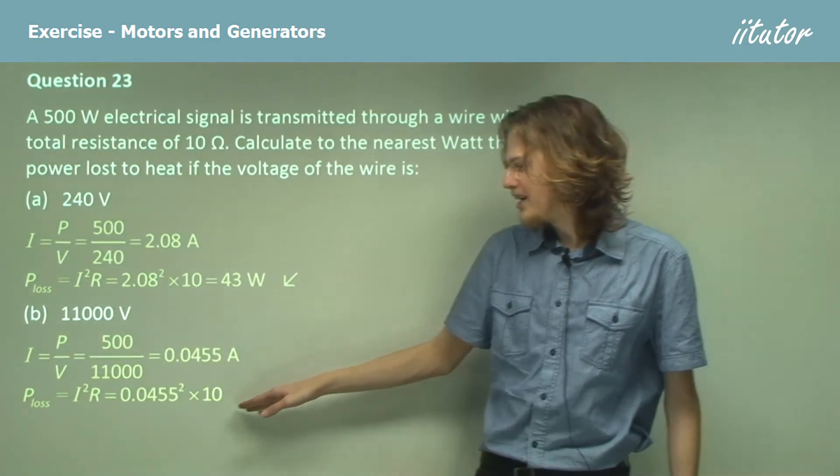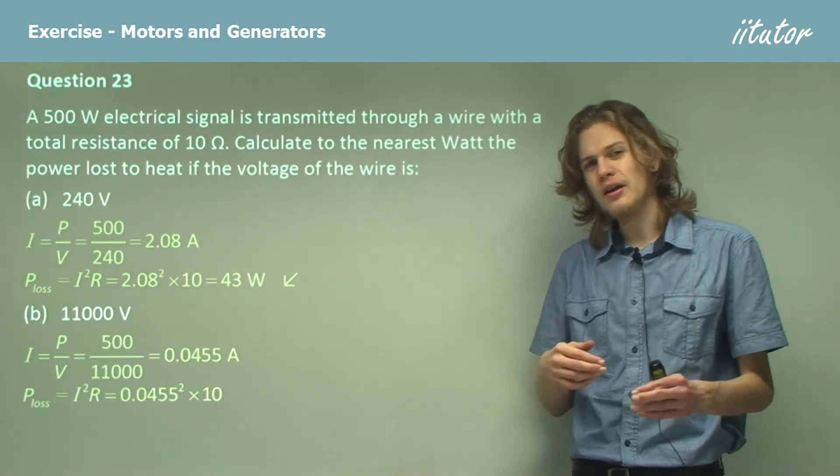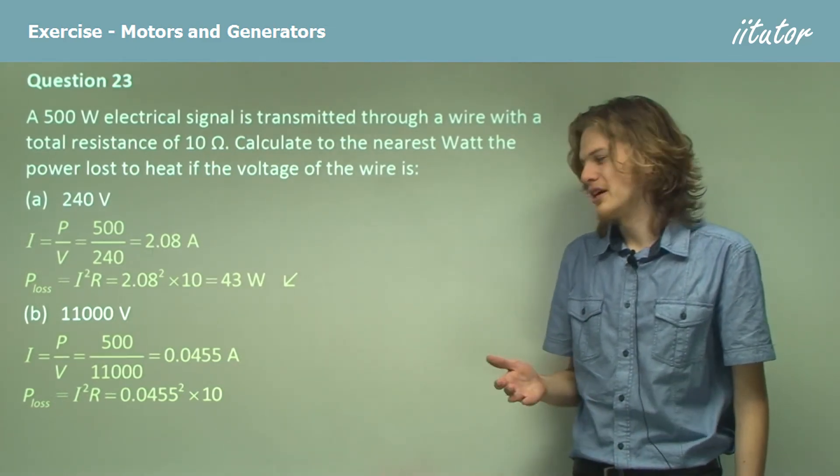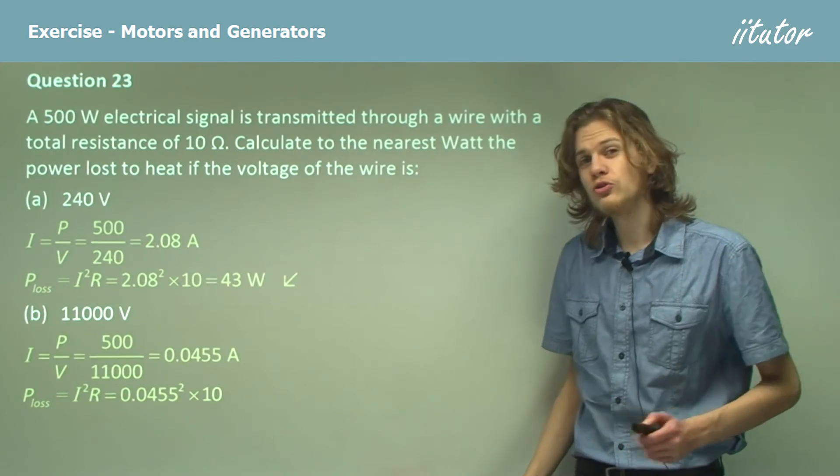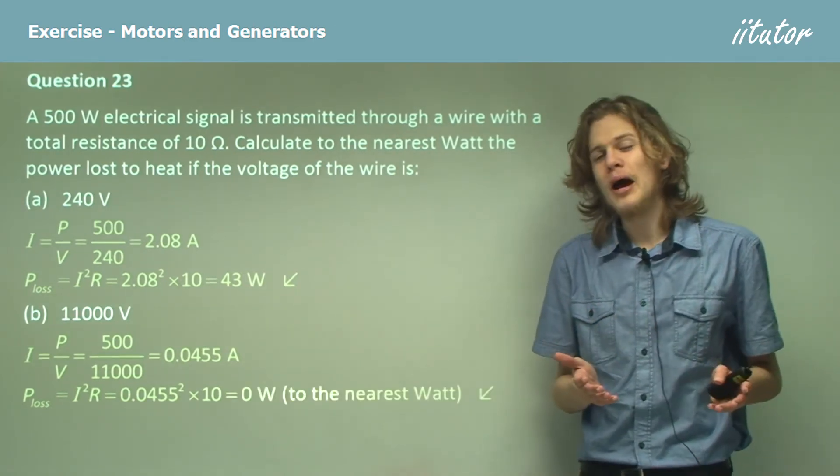But in fact we're getting an even tinier number here. And so if we square, if we take that even tinier number and multiply it by 10, then it's not even going to get up to 0.4. So to the closest watt, it is in fact zero power loss.